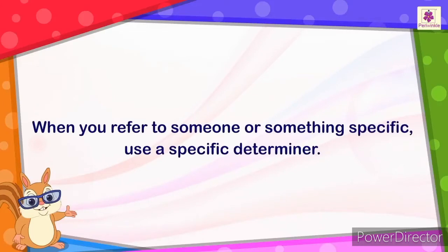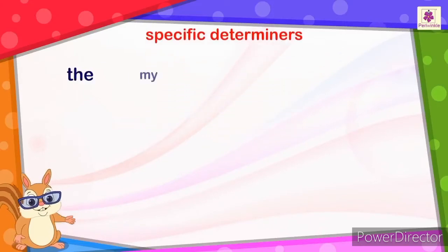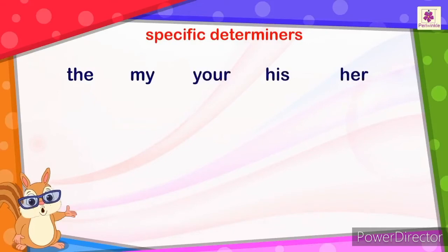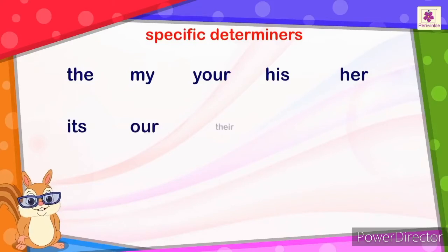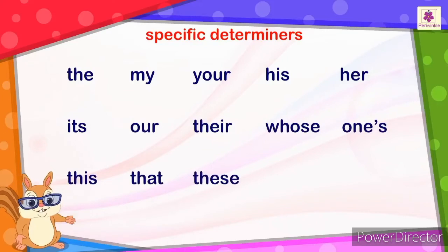When you refer to someone or something specific, use a specific determiner. Some specific determiners are: the, my, your, his, her, its, our, their, whose, this, that, these, those, which.